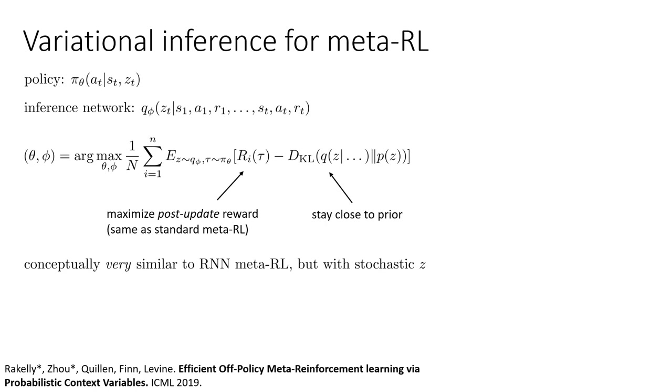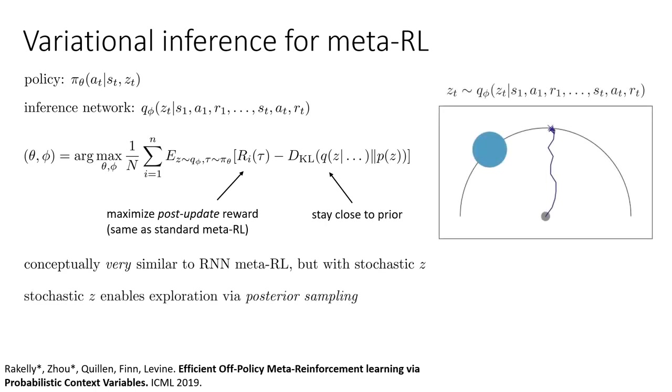So it's conceptually actually very similar to RNN-based meta-RL, in that you read in a history, you predict some kind of statistic, you give that statistic to your policy, and you maximize the reward of the policy that has been given that statistic. The difference is that your encoder now is stochastic, and it infers this latent Z, and you can explore by sampling it from your encoder.